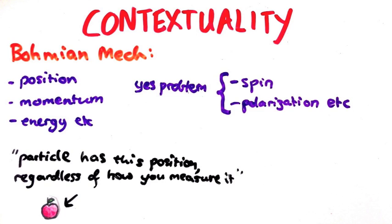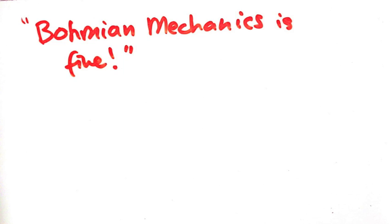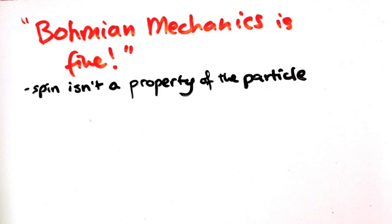The problem only comes when you try and say statements like that about spin and other similar variables. That's why some people say the theory isn't broken, only the way we think about spin is. They say spin is not a real property of a particle, like position and momentum. Instead, it only comes into play in an indirect way.